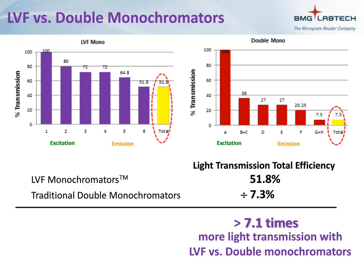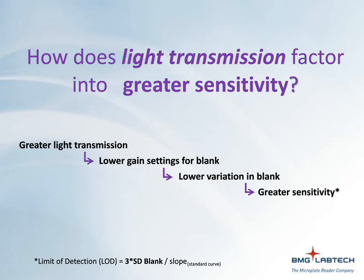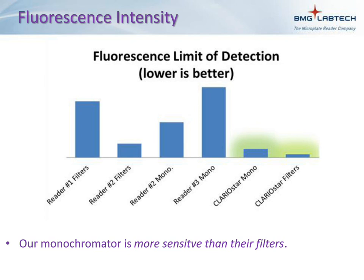What does this mean in terms of sensitivity? With greater light transmission, you're able to set your gain settings lower, which leads to lower variation in the blanks and greater sensitivity as determined by the limit of detection. Comparing instrument performance based on LOD for fluorescein, the results reflect the improved performance of the ClarioStar — based on results published on different companies' websites — and this reflects the improved sensitivity of the ClarioStar's monochromator. This is a result of the improved transmission efficiency as well as the ability to select the appropriate bandpass for an individual fluorophore.